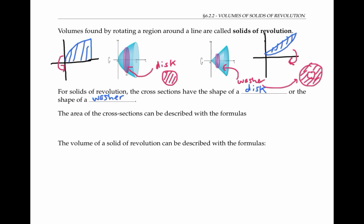The area of a disk is given by the familiar formula pi r squared, where r is the radius. The area of a washer can be written as pi times r-outer squared minus pi times r-inner squared, where r-outer is the radius of the big circle and r-inner is the radius of the little circle. This formula works because the area of the washer is just the area of the larger circle minus the area of the inside smaller circle.